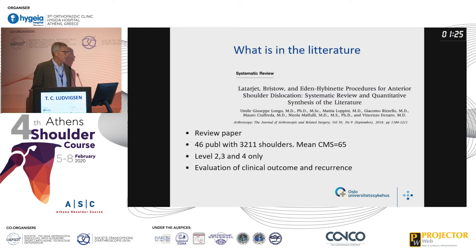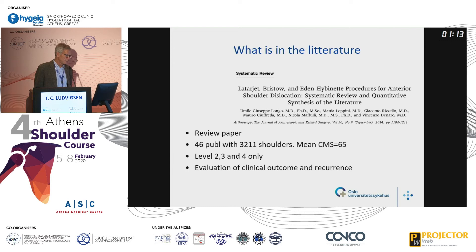And long-term complications include non-union, graft lysis, and arthritis. So what is in the literature when we compare these procedures? This review paper from 2014 compared the Latarjet, Bristow, and Eden-Hybinette procedures, based on 46 publications with 3,200 shoulders and a quality factor of 65 — rated from 0 to 100 — consisting only of Level 2, 3, and 4 studies.